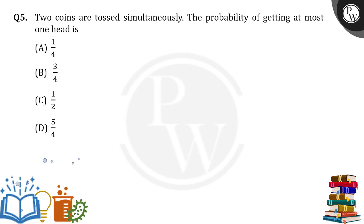Hello everyone. Two coins are tossed simultaneously. The probability of getting at most one head is how much? Let's suppose there are two coins. So if you toss up a coin, what are the possible outcomes?